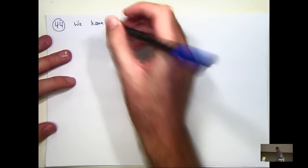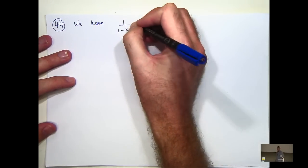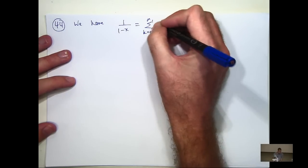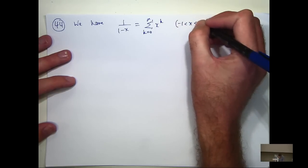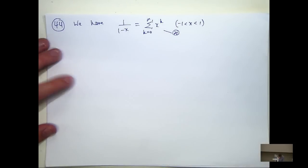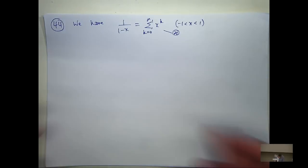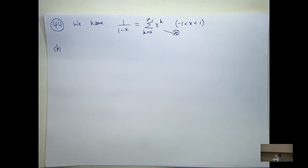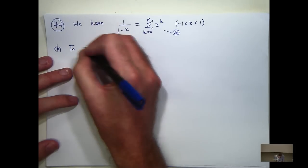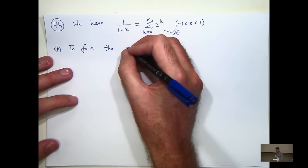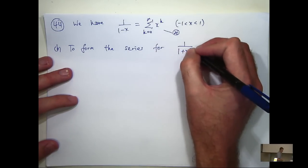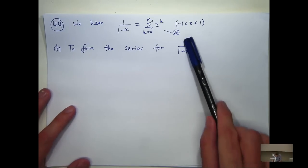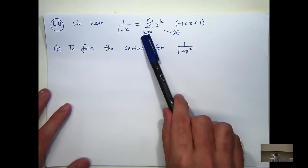Alright, so in 44 you're asked to use, again, a geometric series. So let's call this star. And we're asked to form a power series for one on one plus x squared. So I'm doing part b now. Any ideas on how we can form the power series for one on one plus x squared from that?